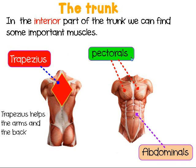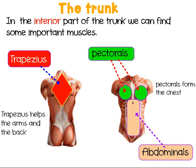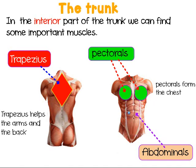Pectorals — pectorals are big muscles on top of your trunk and they form the chest. And then the abdominals are the middle part of your trunk — also called the chocolate tablet, the six pack. The abdominals are a bunch of muscles that help you turn your trunk to one side and the other, and bend down and up.